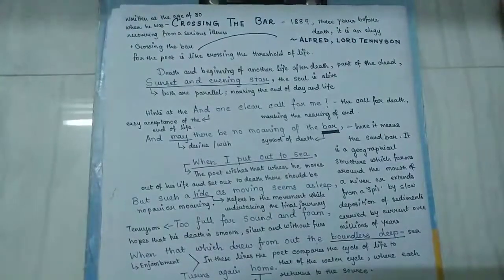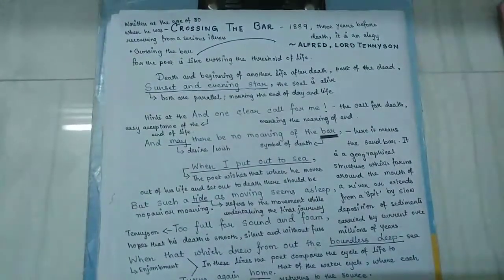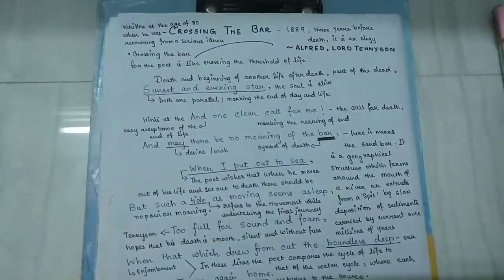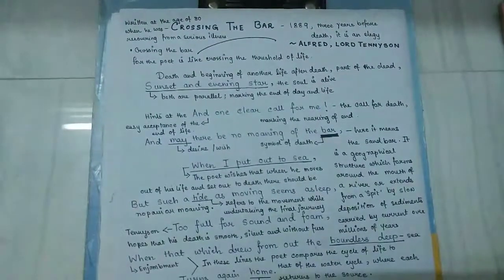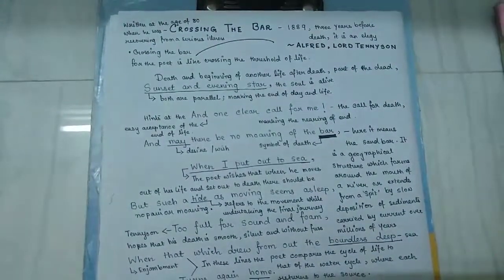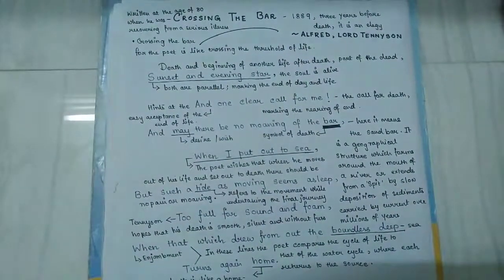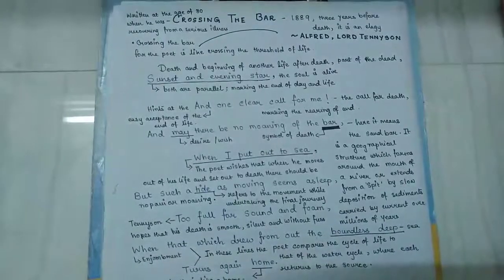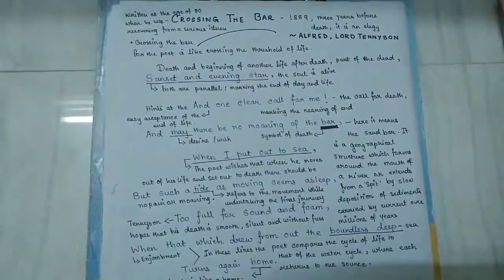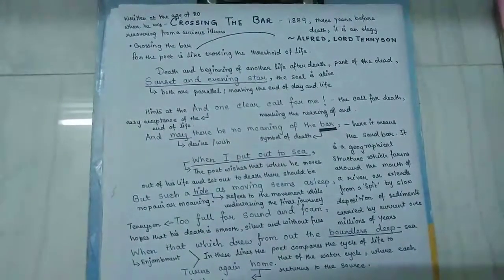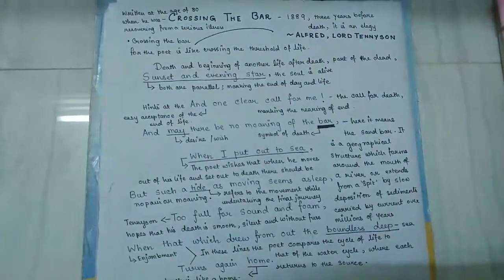Hello everyone, welcome to the next video. Crossing the Bar by Alfred Lord Tennyson. This is a simple poem with deep philosophical undertones resulting from the poet's old age. This poem shows a clear attitude of Tennyson moving towards the close of his life.